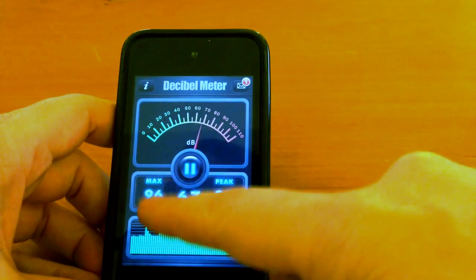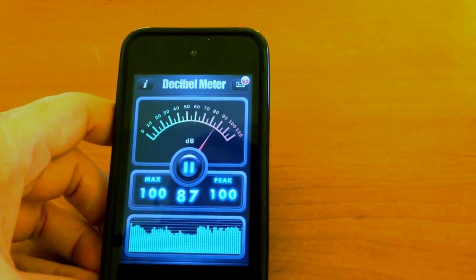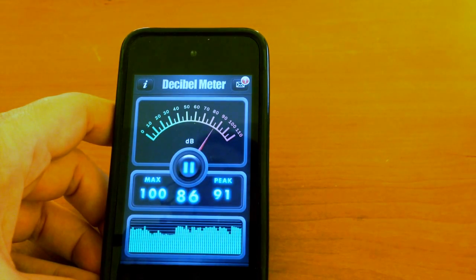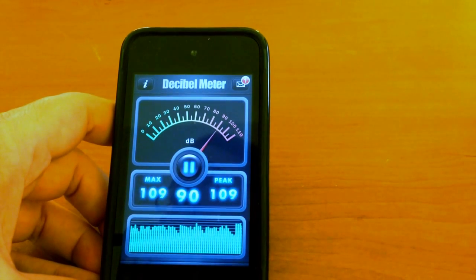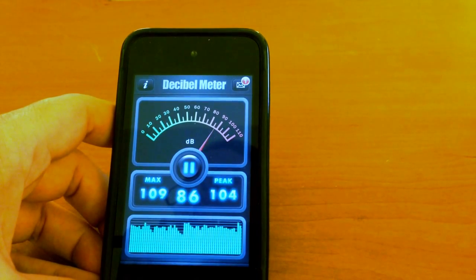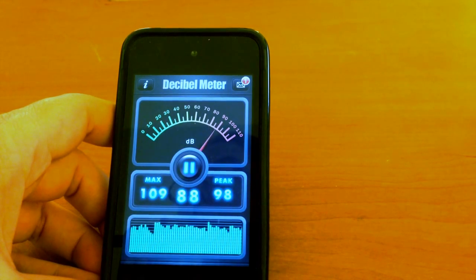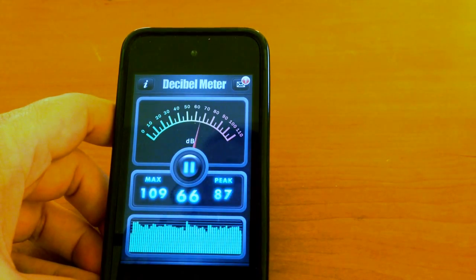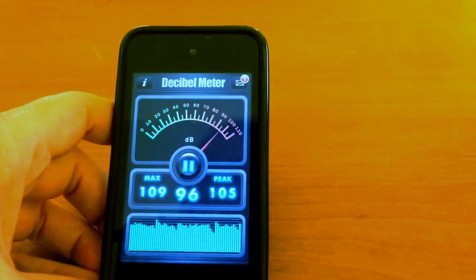Apparently, peak and max are not the same thing in the world of noise meters. When I googled it, max is what you'd expect - the maximum decibels. Peak is related to C-level decibels rather than A-level decibels, with a time factor. For my purposes, I didn't really need to understand it. If you're interested, I put a link below, though I don't know how good a source it is.